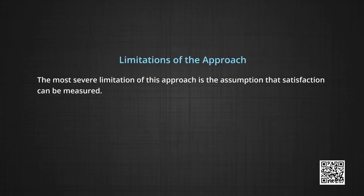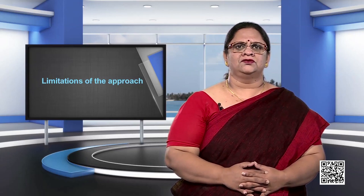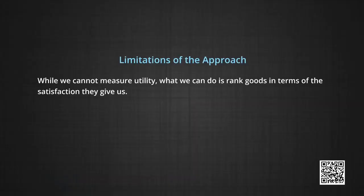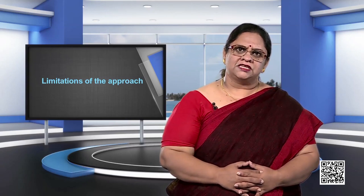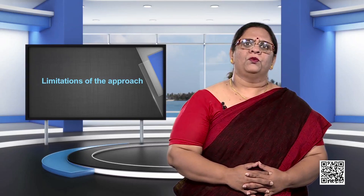The most severe limitation of this approach is the assumption that satisfaction can be measured. Can we really measure the satisfaction we get from eating a pizza, a mango, or a banana? If utility cannot be measured, it would be difficult to give it a unit like utils, making total utility and marginal utility difficult to measure. While we cannot measure utility, what we can do is rank goods in terms of the satisfaction they give us. It is possible to say that I like mangoes more than bananas, or even that I like two mangoes as much as three bananas. Such an approach allows ranking of commodities without measuring the utility of any individual unit.